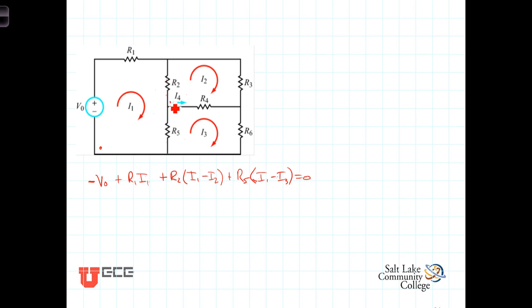Let's take a look at the top mesh, starting right here and going up. We've got R2 times the current flowing up, which is I2 minus I1. Continuing on around, we have plus R3 times the current through R3, which is simply I2. Coming back to the left through R4, we'll have plus R4 times the current flowing in R4, which is I2 minus I3. That brings us back to where we started, so the sum of those terms must equal zero.